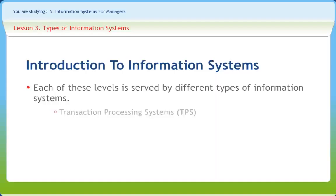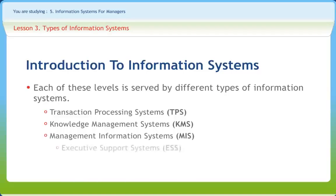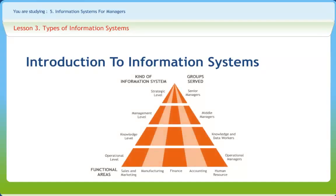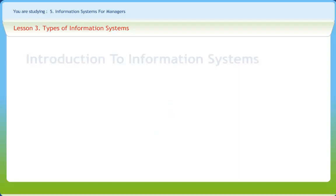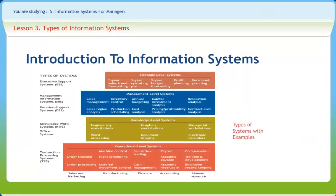The four system types are: Transaction Processing System (TPS), Knowledge Management System (KMS), Management Information Systems (MIS), and Executive Support System (ESS). The figures shown here illustrate various organizational levels, functional systems, and types of systems with examples.